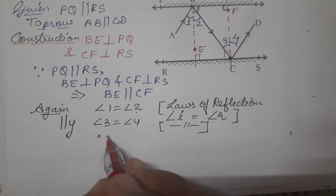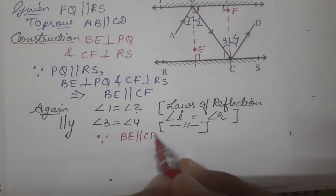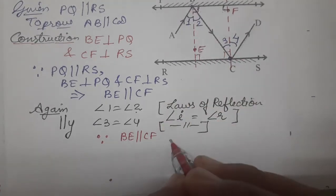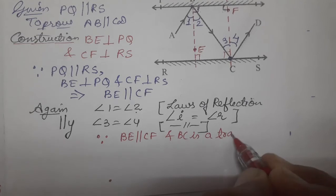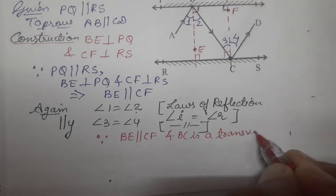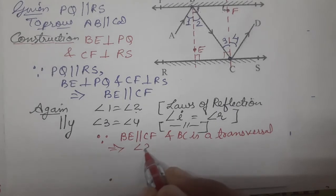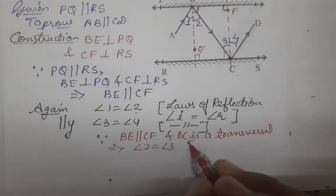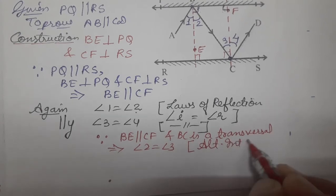Since BE parallel to CF, then angle 2 equals angle 3. See, BE parallel to CF with alternate interior angles. Since BE parallel to CF and BC is transversal, then angle 2 equals angle 3 by alternate interior angles.